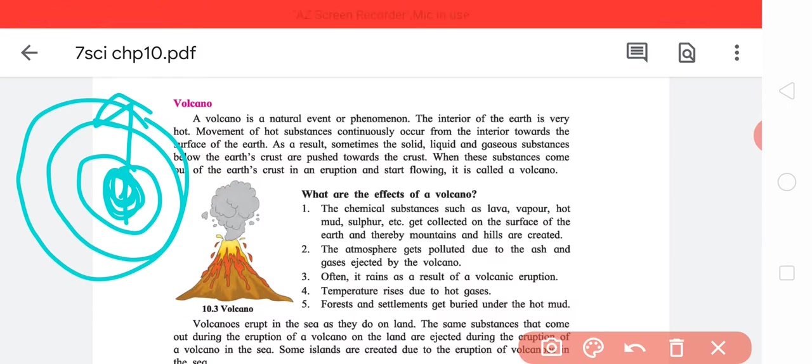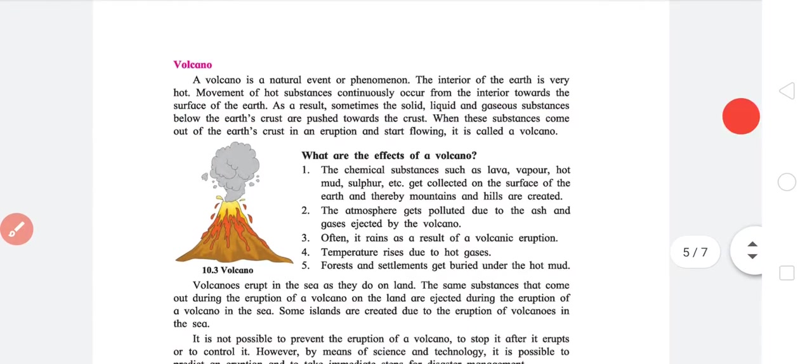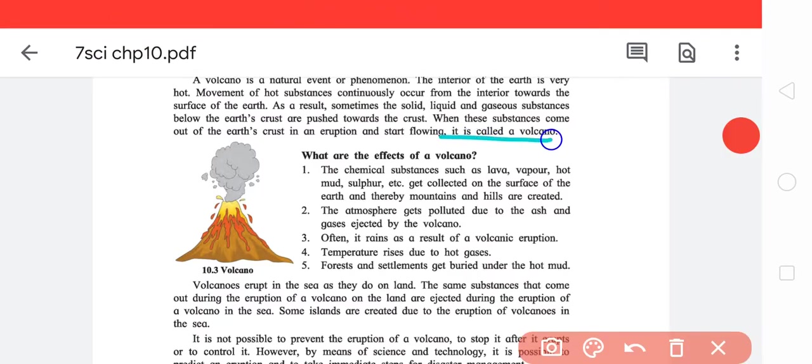Basically if you have never learned it, just take that inside the earth there is some phenomenon happening which generates substances. As a result, sometimes the solid, liquid, and gaseous substances below the earth's crust are pushed towards the crust. All this thing is being generated, so to find a vent they come to the surface. When these things come out of the earth's atmosphere in eruption and start flowing, it is called a volcano. Basically when this kind of eruption takes place, it need not be as dramatic as the one shown here.